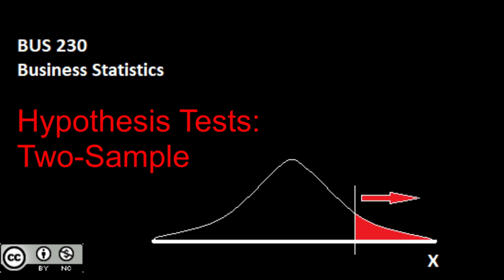Think about this: you have a sample mean of incomes from one group and a sample mean of incomes from another group, and you want to say, hey, I have a difference between these two sample means. Is one group accountants and the other marketing? Or did I just sample all accountants and the difference in my two sample means is just due to sampling error?